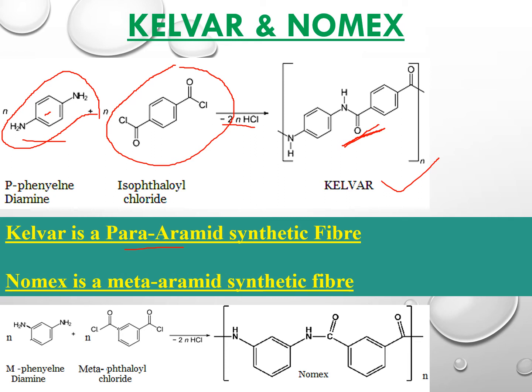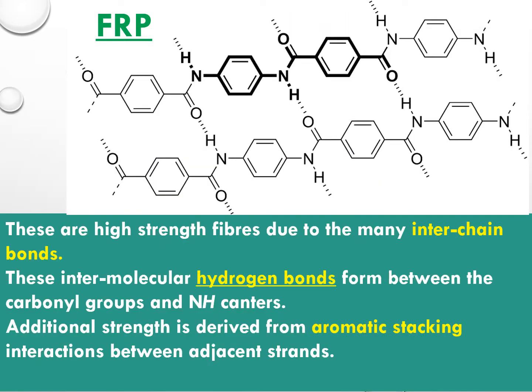Nomex is a meta-aramid fiber. By replacing the para position with the meta position — using meta-phenylene diamine and meta-isophthaloyl chloride — when they interact they form a meta-polymer that is called Nomex. These fibers are then added to polymers.